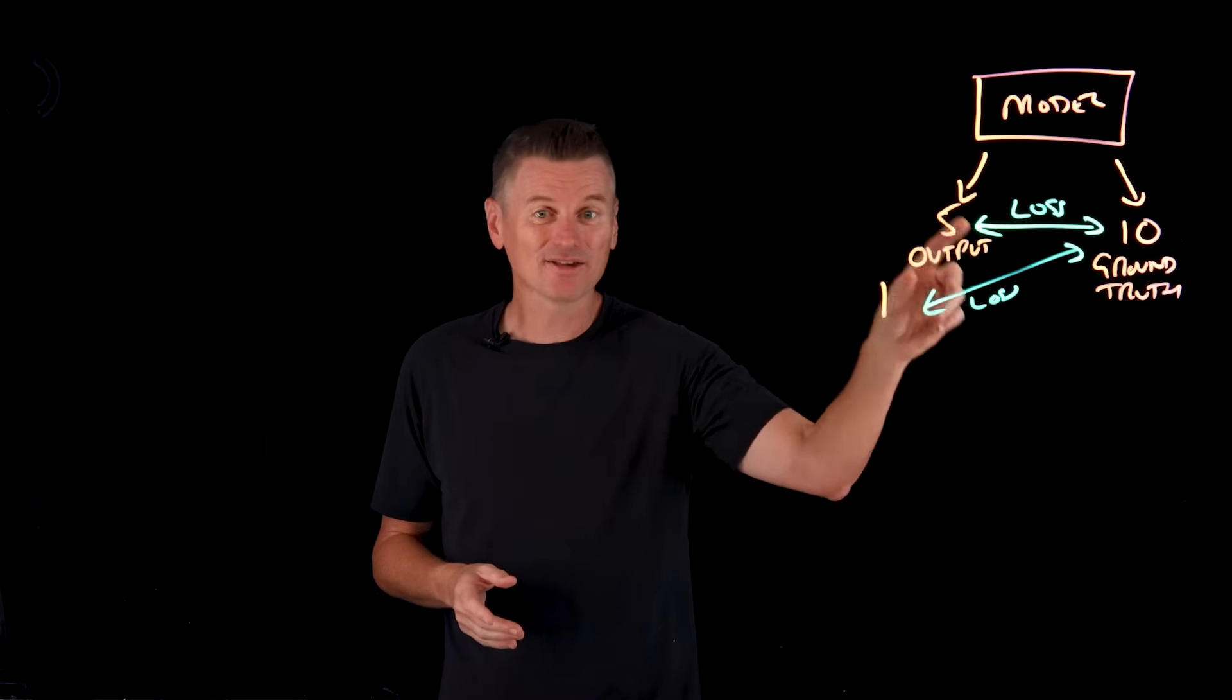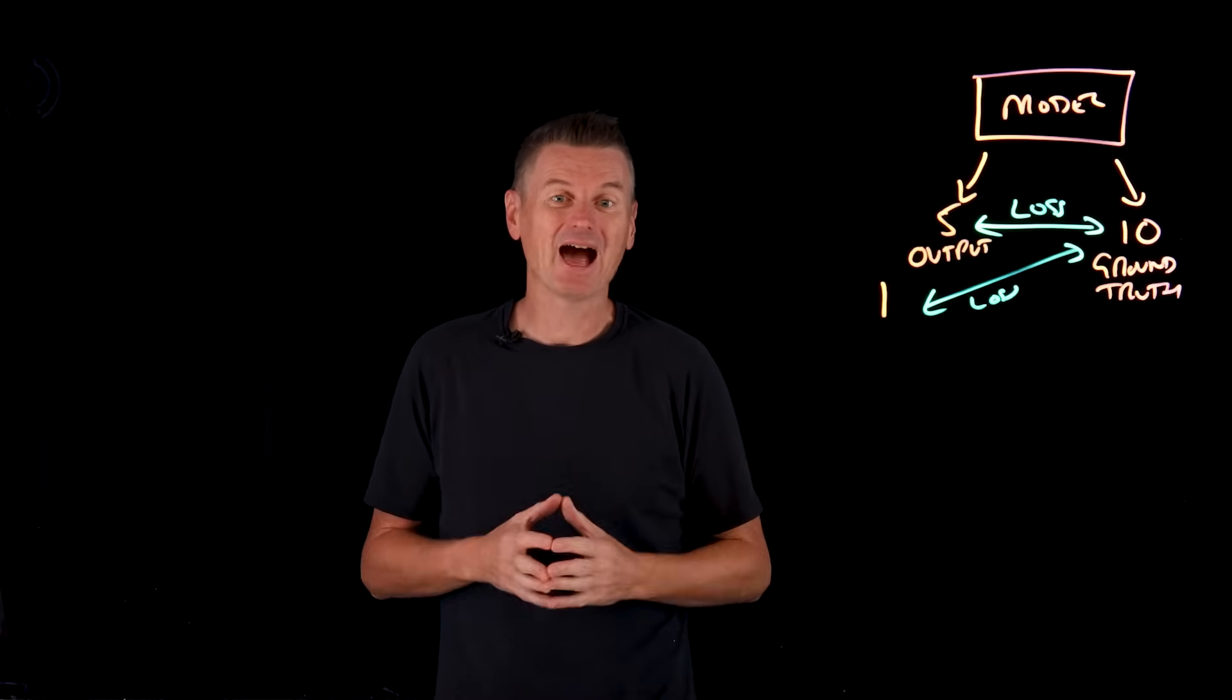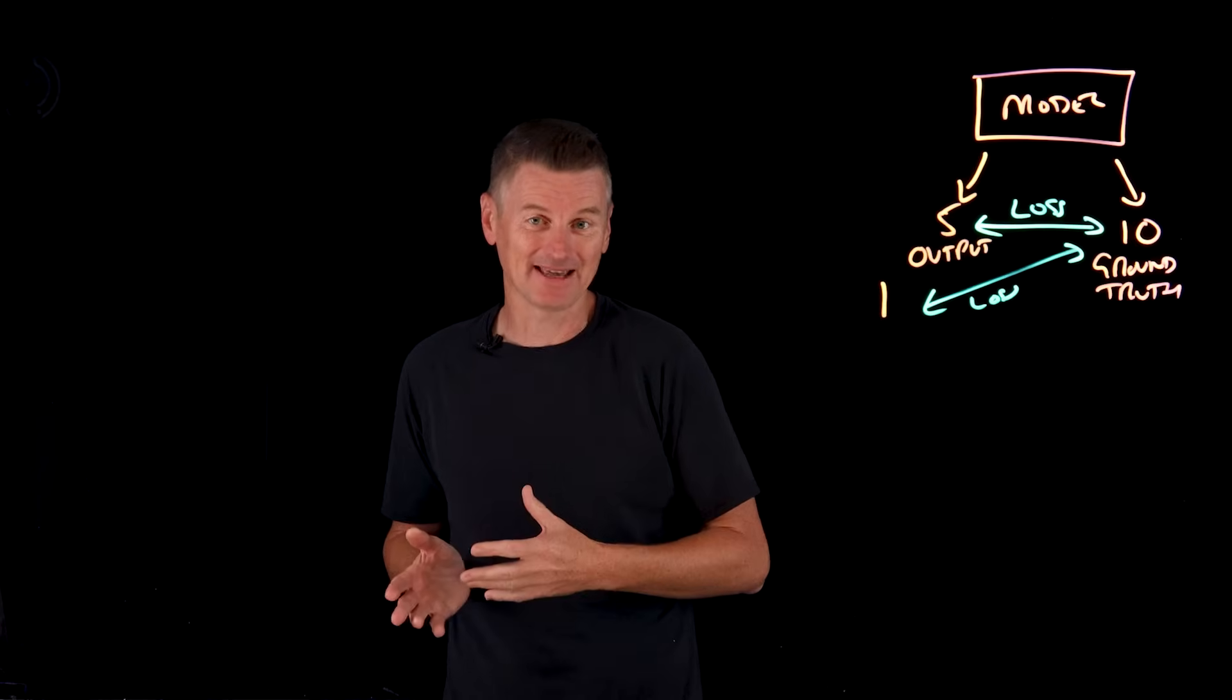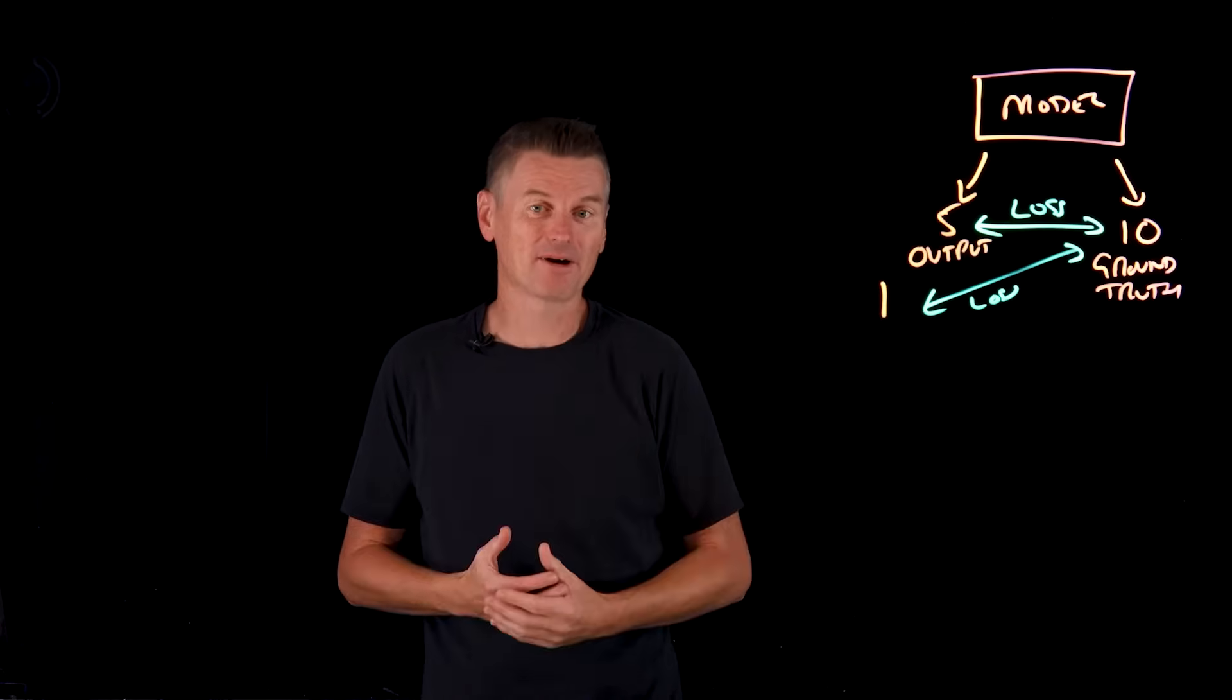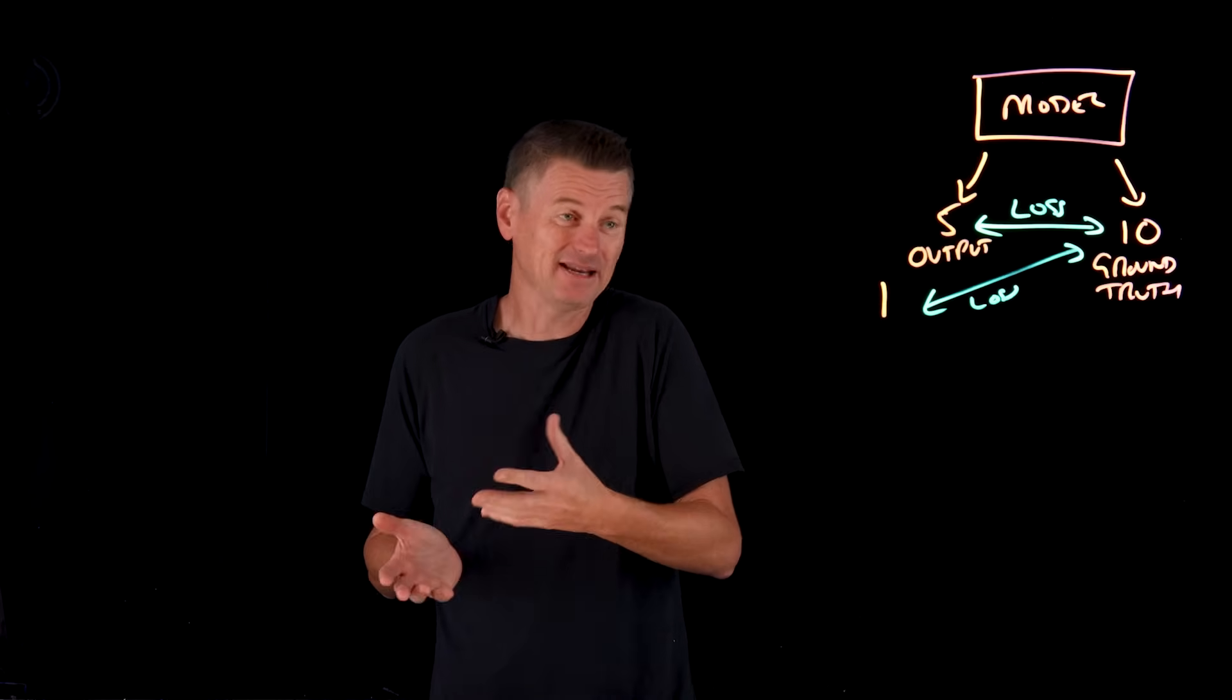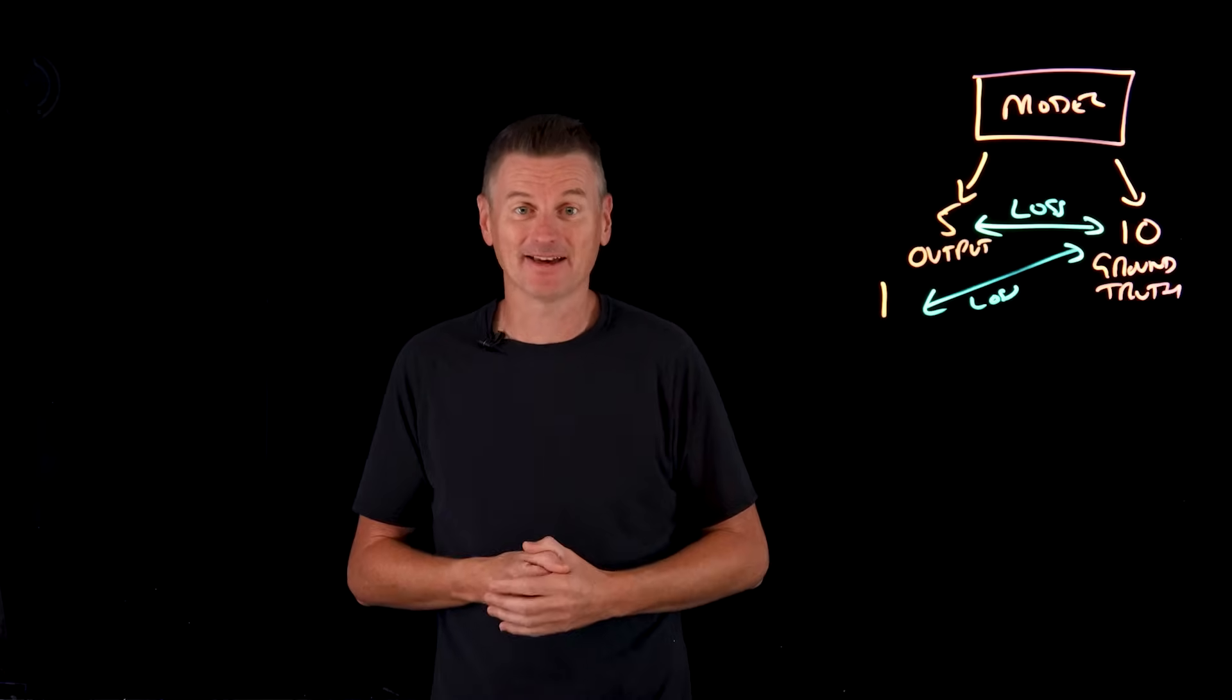Clearly this model needs some adjustments, and that's where loss functions can help. Loss functions let us define how well a model is doing mathematically. If we can calculate loss, we can adjust model parameters and see if that increases loss, meaning it's made it worse, or decreases loss, meaning it's made it better. At some point we can say a model has been sufficiently trained when loss has been minimized below some predefined threshold.